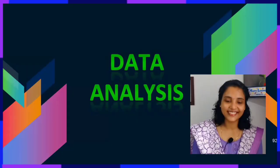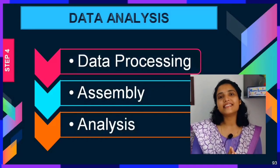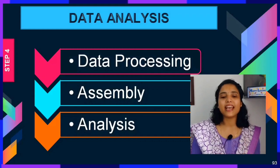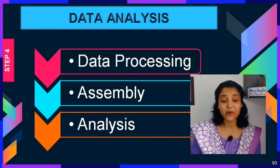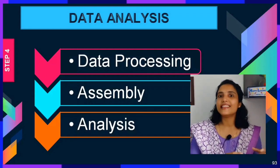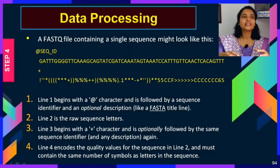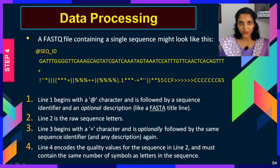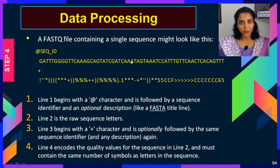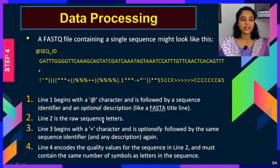Let us see what happens in data analysis. Data analysis basically involves data processing or pre-processing, assembly, and then the analysis. The data you get after sequencing is not just raw ATCG — you get it in something called FASTQ format. Let us see what are the components present in that file format.